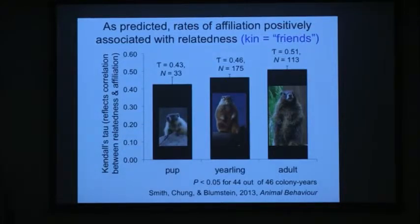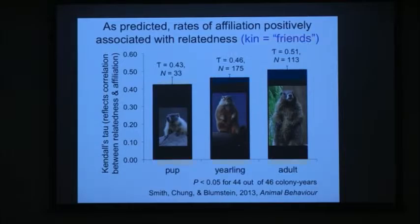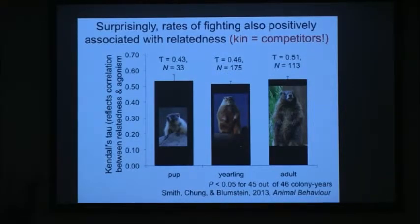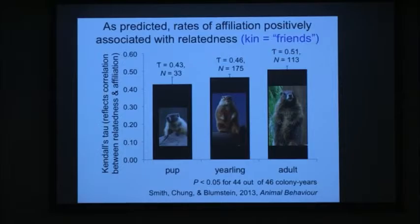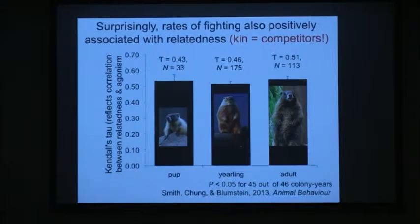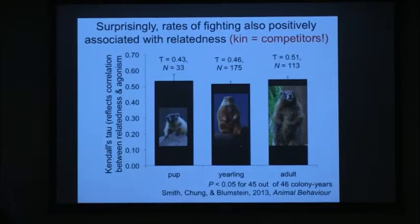If kin selection were protecting individuals from fights, we'd expect a negative relationship between genetic relatedness and aggression. But what we find is the pattern looks almost identical to the friendly behavior pattern. Kin are also the closest competitors in this group, so your closest allies in these societies are also your closest competitors.